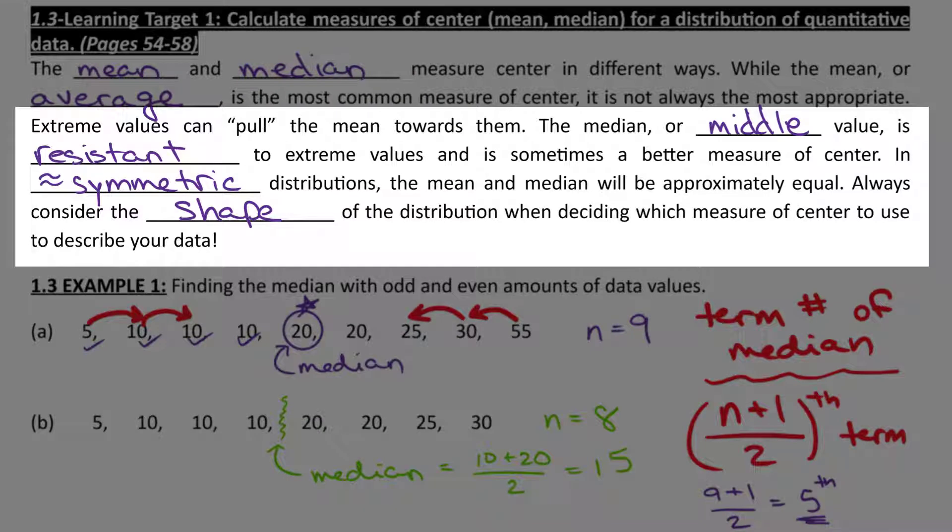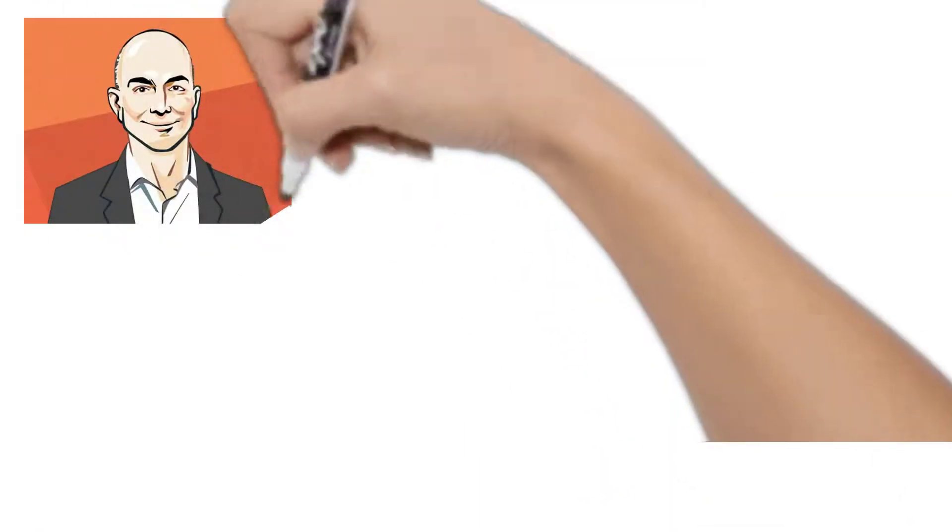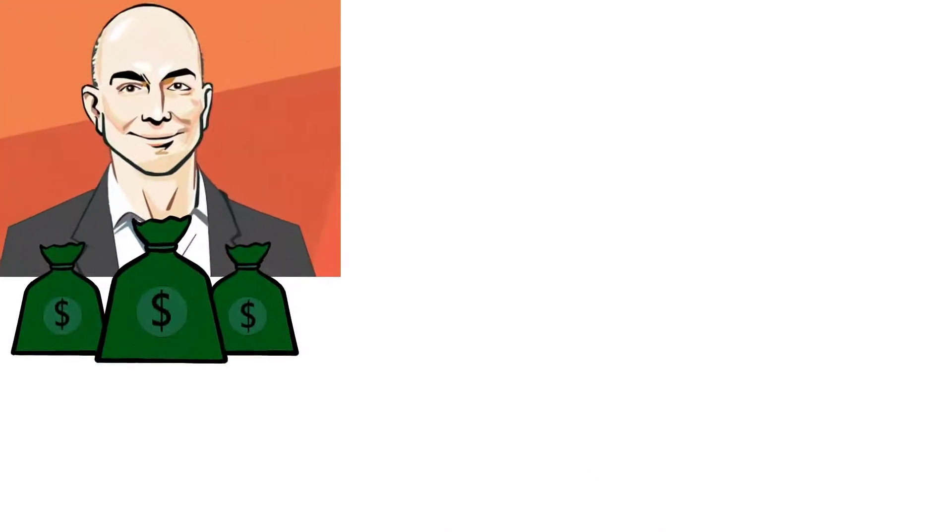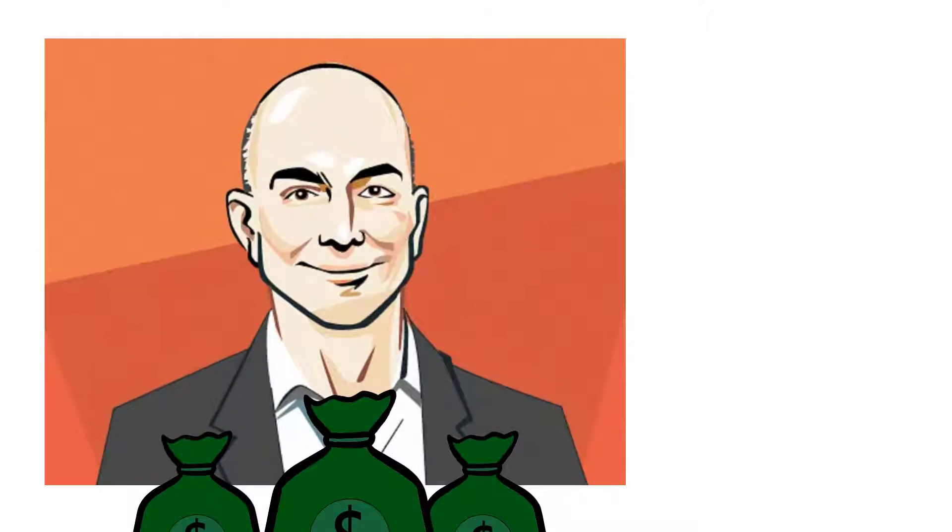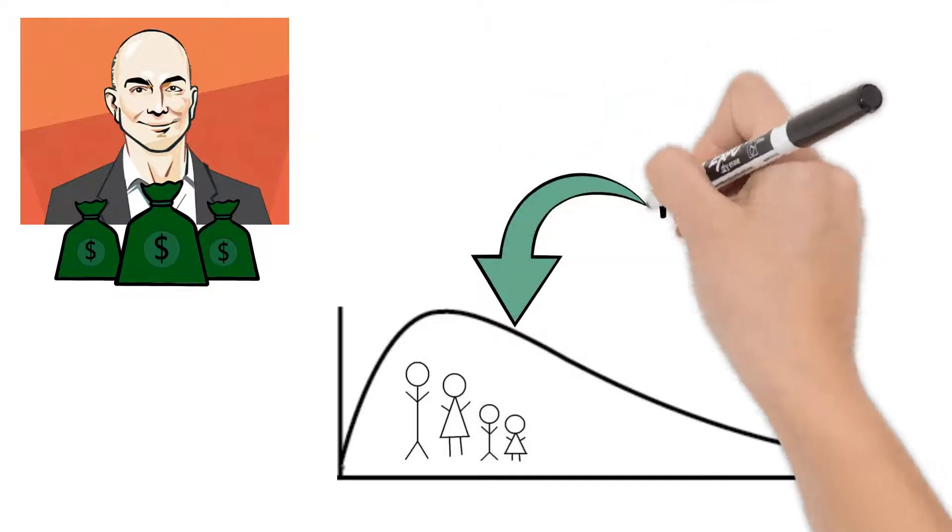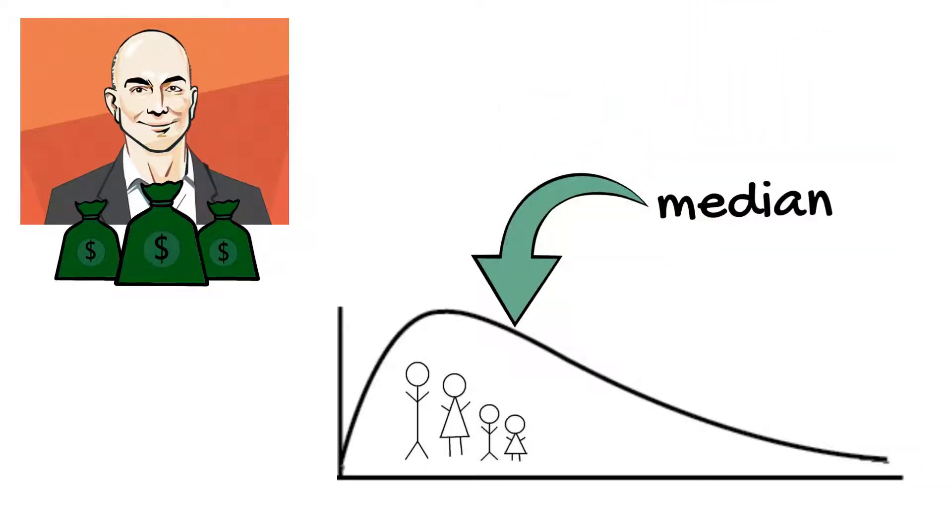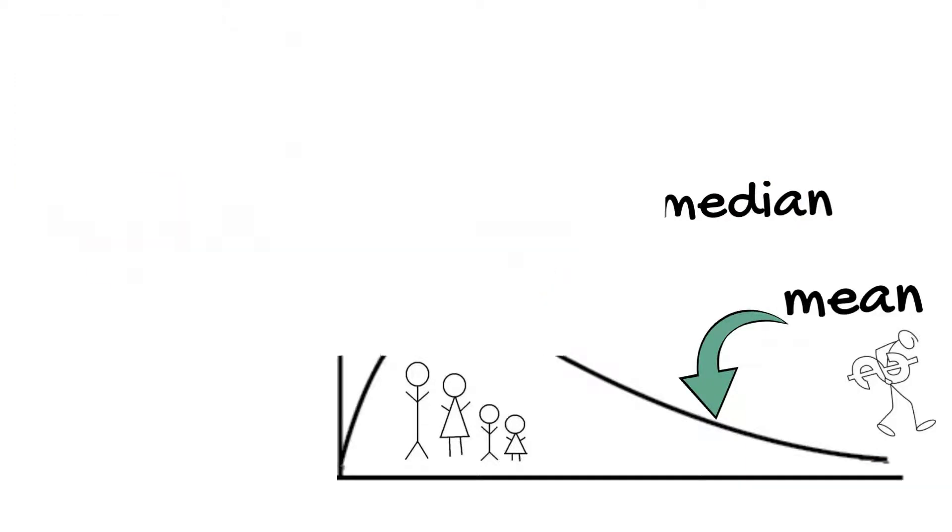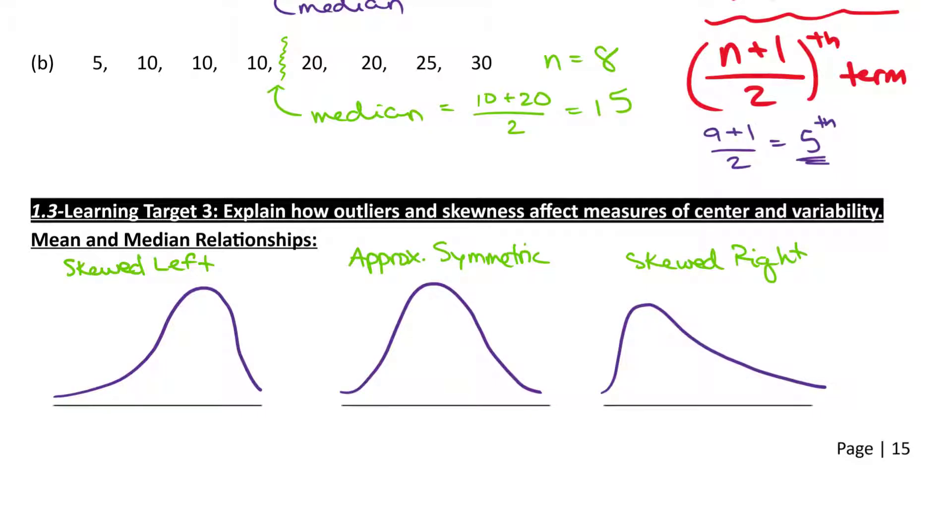Another important part in today's lesson is describing how shape affects the mean and median relationship. So let's look at an example where we're studying the distribution of individuals' wealth. Some people, like our friend Jeff Bezos, who owns Amazon, his individual wealth only counts as one data value, but it's way larger than everybody else's. So most data values will be towards the lower end. That's why we have a skewed right distribution. The median still splits this data in half. But when you add Jeff to the data, his one data value is going to pull the mean far to the right.